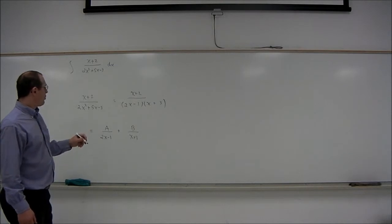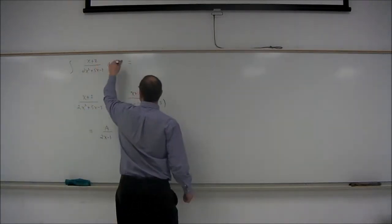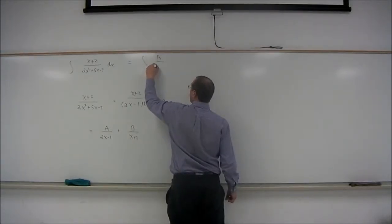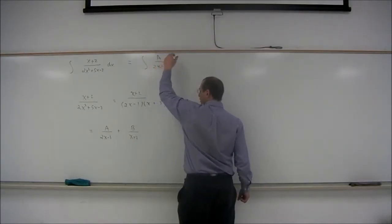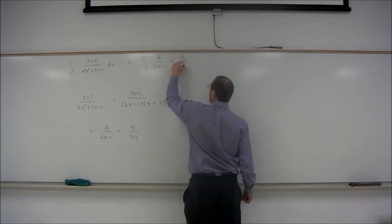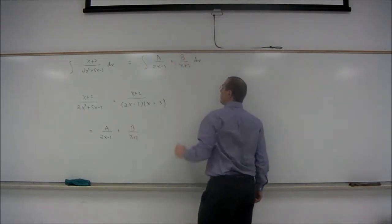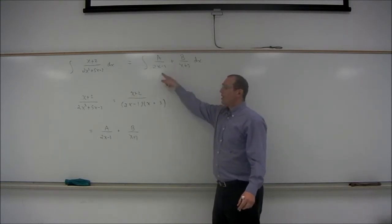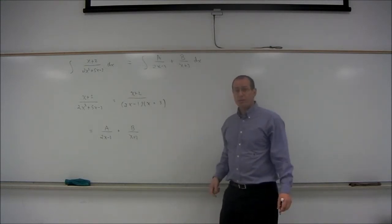So the main point is that this integral, we write it using the partial fractions, a over 2x minus 1 plus b over x plus 3. So the integral can be solved, because these simpler fractions, we can integrate without too much trouble.